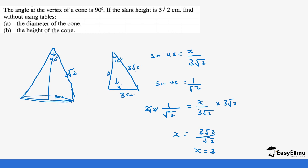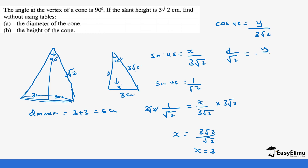So if this radius is 3 centimeters and the other radius is also 3 centimeters, the diameter is going to be 3 plus 3, giving us 6 centimeters. For the height of the cone, we use cos 45 equals y — the adjacent — over 3 root 2. Cos 45 is 1 over root 2, so 1 over root 2 equals y over 3 root 2. Multiplying by 3 root 2: root 2 and root 2 cancel, so y equals 3 centimeters.